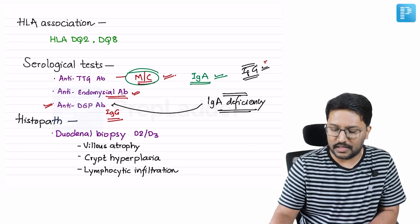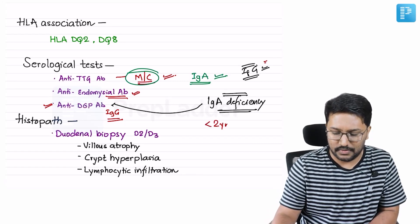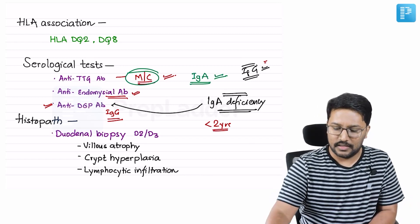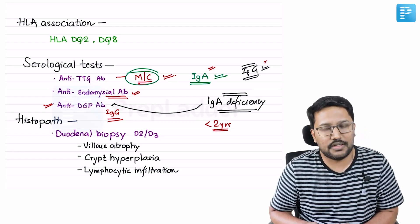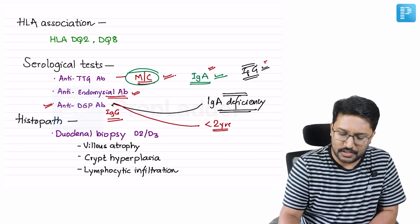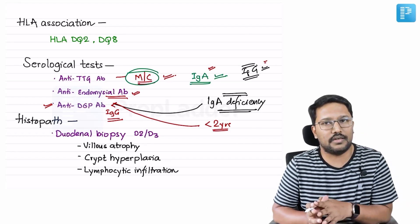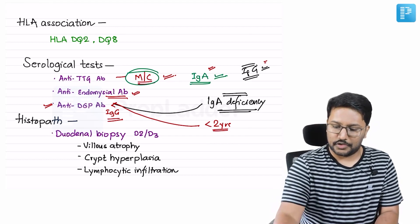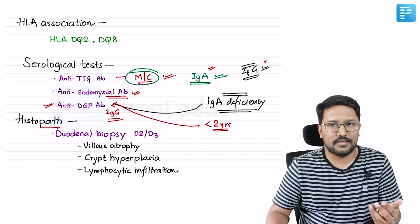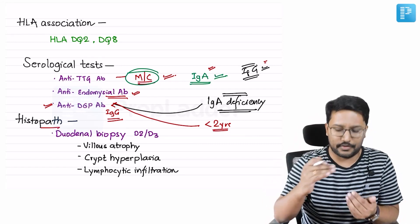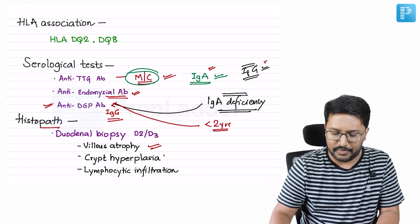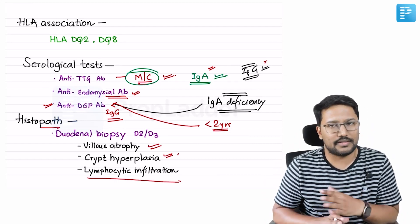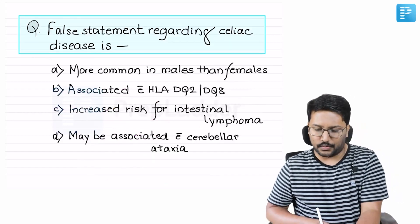For under 2 years of age, IgA anti-TTG is not the preferred initial investigation; we prefer the anti-deamidated gliadin antibody test. Histopathology-wise, we are looking at three changes: villus atrophy, crypt hyperplasia, and lymphocytic infiltration. However, these are not specific for celiac disease.